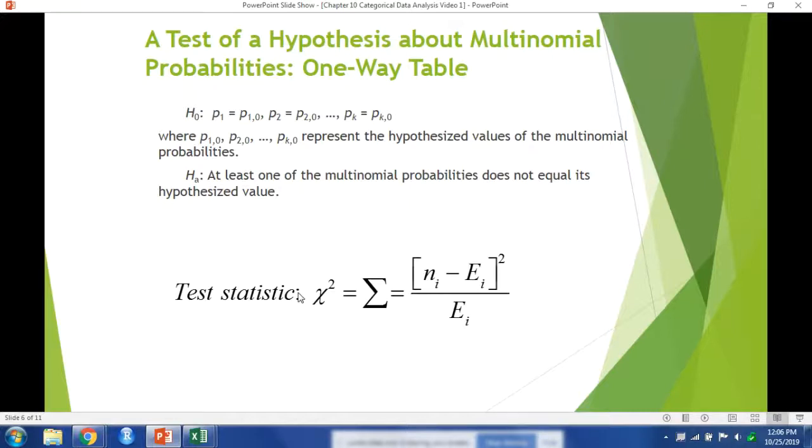Our null hypothesis is that each probability calculated will be equal to whatever our expected probability was. And our alternative hypothesis is at least one of the multinomial probabilities does not equal its hypothesized value. So we will be calculating out the chi-squared statistic. It is found by subtracting our observed value from the expected value and squaring it and dividing by the expected value.